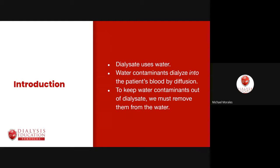The majority of the proportion of dialysate is water. With a 45X proportioning ratio, the parts of water are 42.28. The parts of acid concentrate are one, and the bicarbonate is 1.72. So again, most of dialysate is water.